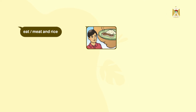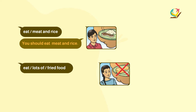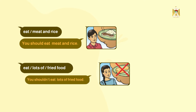Number two: eat meat and rice. The good advice is: You should eat meat and rice. عليك أن تتناول اللحم والأرز. Number three: eat lots of fried food. Is it good or bad? Fried food — الطعام المقلي — eating lots of it is bad. So: You shouldn't eat lots of fried food. عليك أن لا تتناول الكثير من الطعام المقلي.